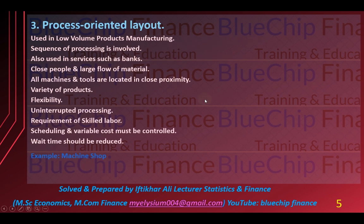Teesra process oriented layout hai. Process oriented layout jaise ke naam se zaahir hai ke is ke andar processing involve hai. Yeh aisi product manufacturing ke andar use kiya jata hai jo kam volume mein produce ki jati hai. Aur un ka jo manufacturing process hai wo ek sequence se guzarti hai — ek part taiyar hota hai to wo doosre section mein chala jata hai, phir wahan pe us ki further processing hoti hai, phir teesre mein. Yeh sequence mein manufacturing ki jati hai. Also used in services such as banks.